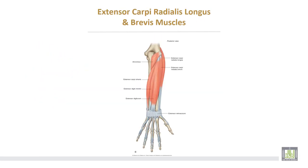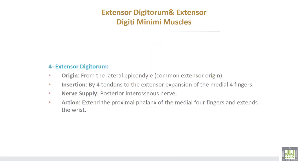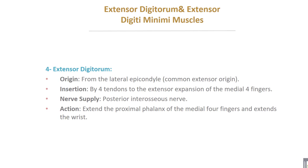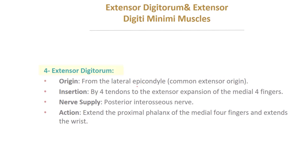This is extensor carpi radialis longus and extensor carpi radialis brevis — this is the longus and this is the brevis. Extensor digitorum takes origin from the lateral epicondyle, common extensor origin; insertion by four tendons to the extensor expansion of the medial four fingers. Nerve supply from the posterior interosseous nerve. Action: extends the proximal phalanx of the medial four fingers and extends the wrist joint.